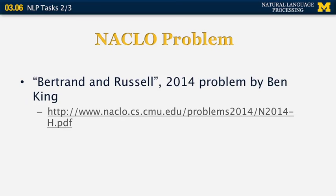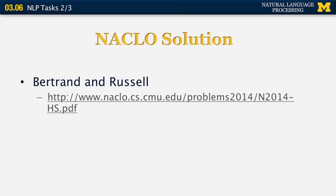Here's a relevant problem to semantics from NAC law called Bertrand and Russell, a 2014 problem by Ben King. You can download it from the website shown. When you're done solving it, you can check for the solution, which is also shown here.